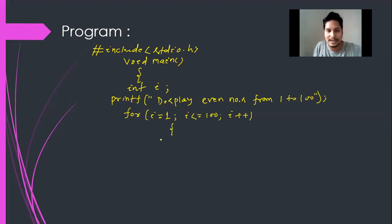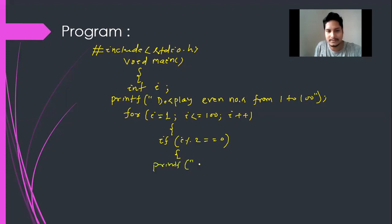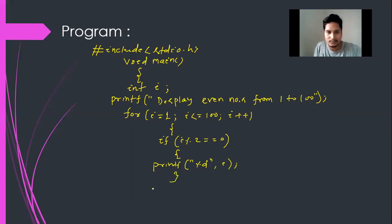Within the for loop, I am using an if condition: if i modulo division 2 equal to equal to 0, then printf with percent d and comma i — then i will be printed. That means the even numbers will be printed. If close, for loop close, then main function close.